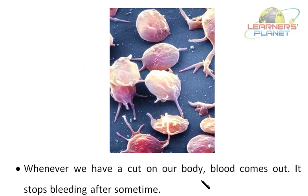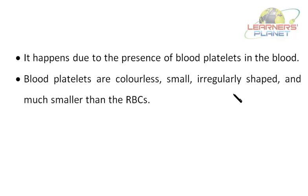Let us find out — it is all about blood platelets. Whenever we have a cut on our body, blood comes out, but blood platelets stop the bleeding after some time. This is all due to the presence of blood platelets. Blood platelets are colorless. The clot is formed because of the presence of blood platelets — blood platelets assist in the clotting of blood.